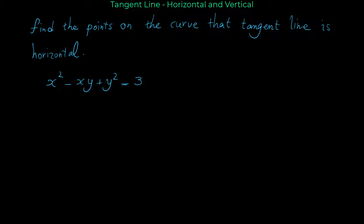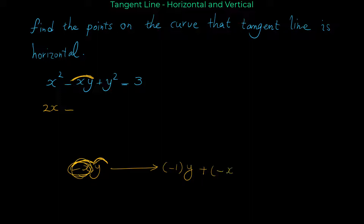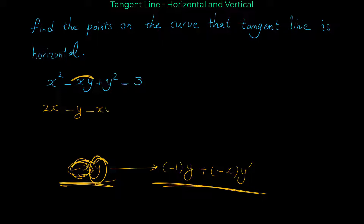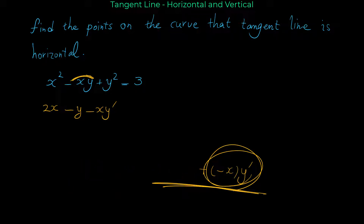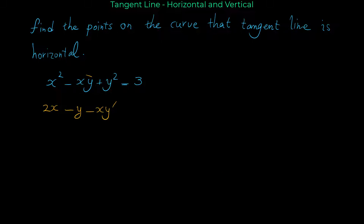The first step is to take the derivative of both sides of the relation with respect to x. The derivative of x² is 2x. For finding the derivative of -xy, we use the product rule. The derivative of -x is -1 times y, plus the first function (-x) multiplied by the derivative of the second function. So the derivative of -xy is -y - xy'.